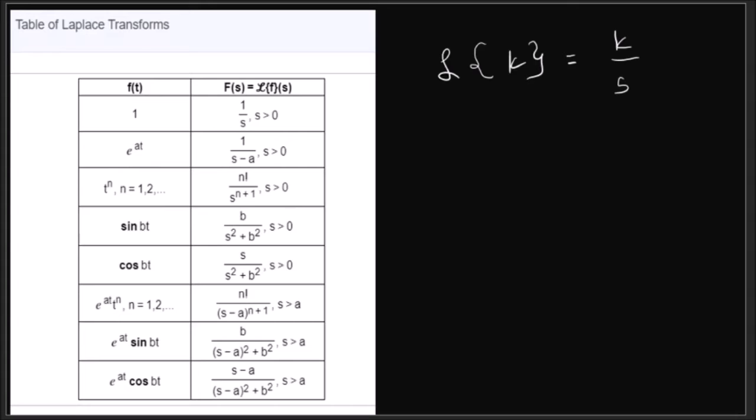Then we have derived the Laplace transform of e raised to at where a is a constant. We've derived this one in our derivation. The Laplace transform for t to the n where n is an exponent, 1, 2, 3 and so forth, is equal to n factorial over s to the n plus 1.